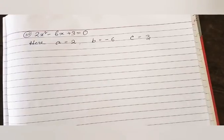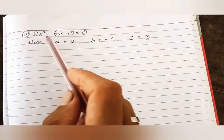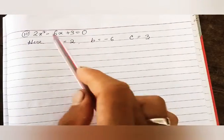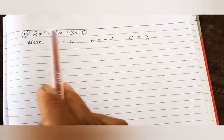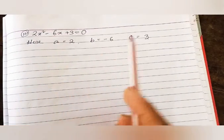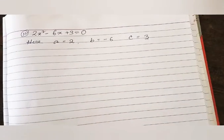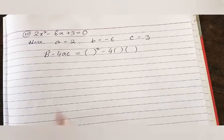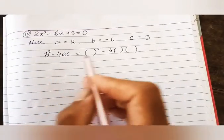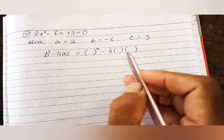This equation is also in the standard form ax² + bx + c = 0. So a = 2, b = -6, and c = 3. Now let us find b² - 4ac.